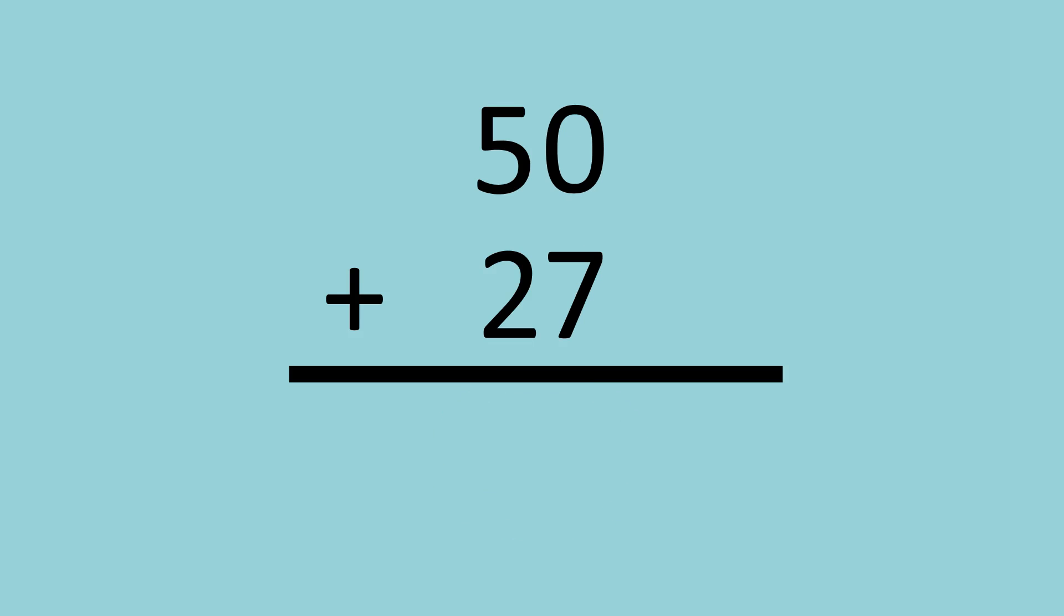Another example is 50 plus 27. First, we will add the ones digits which are 0 and 7, so 0 plus 7 is equal to 7.